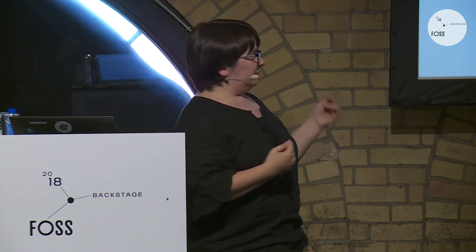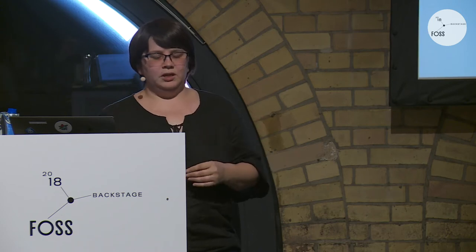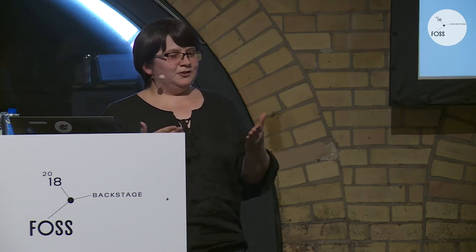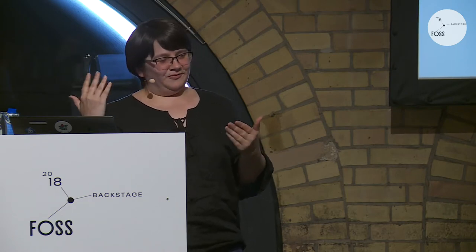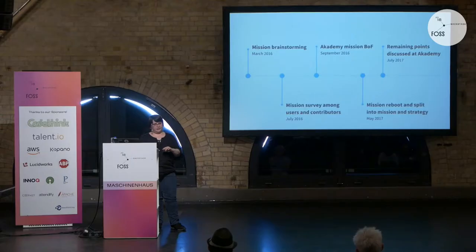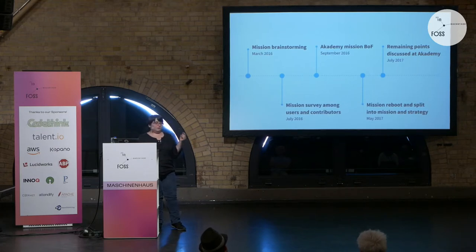At that point — and this is the part I regret most in the process — we let it sit for way too long without pushing it forward, because it was such a hard position to move from. Everyone thought it didn't feel quite right, but it was also hard to move away. In May 2017, we sat down at an extended board meeting, looked at it again, and realized it wasn't actually so hard after several months away. We split it into a part that is actually mission and a part that is strategy, and that solved a lot of our issues. We discussed the remaining points at the next Academy and closed the discussion — but as you can see, it took us over a year for this whole thing, and that was way too long.